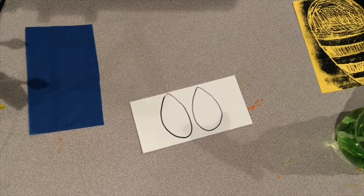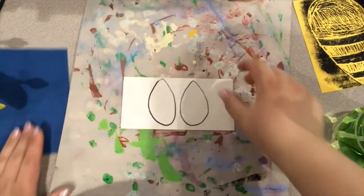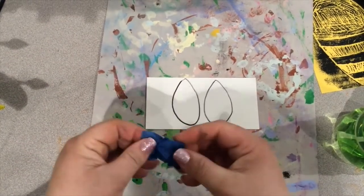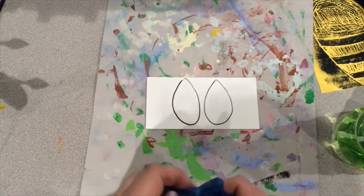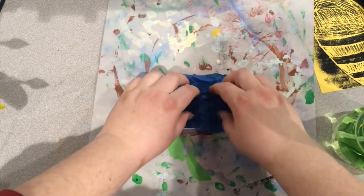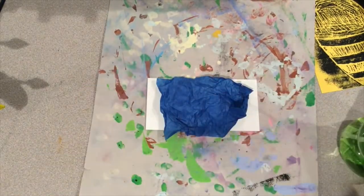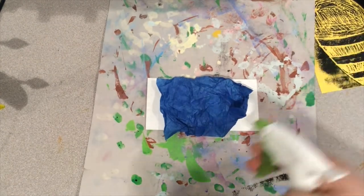After you have your teardrops drawn, your teacher will give you some bleeding tissue paper. You're going to crumple it up, put it on top of your paper, and then spritz it lightly with a water bottle. You don't want to completely soak it, just enough to get it wet to make the tissue paper stick. It's going to leave a really cool pattern on your paper when the tissue paper dries.